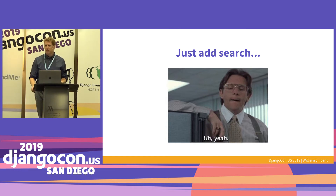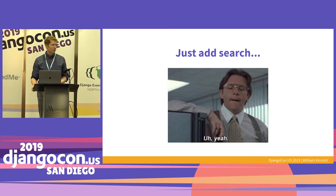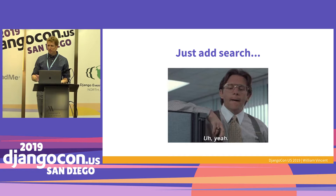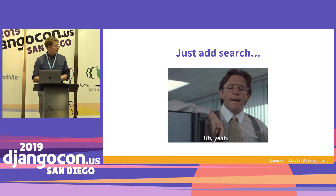My first major site was a school search site — kindergarten through 12th grade schools in the United States, 120,000 rows. Search was pretty important for a school search site and I was utterly lost. To know how to do search, you have to understand Django at probably an intermediate level: forms, how to pass logic, filtering. Search is really, really hard to do well, and on an e-commerce site it's probably the most important thing.